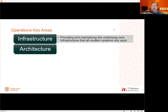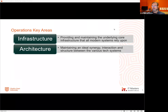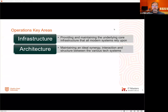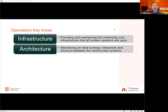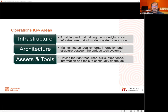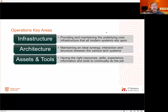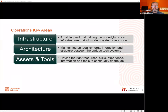Areas of responsibility under operations include: underlying infrastructure — the physical or virtual equipment, services, or cloud hosting everything runs on; architectural components, ensuring interactions, synergies, and flow between systems (bandwidth, relationships); and assets and tools — making sure there are always enough skills, manpower, resources, and tools available to continually do the job.